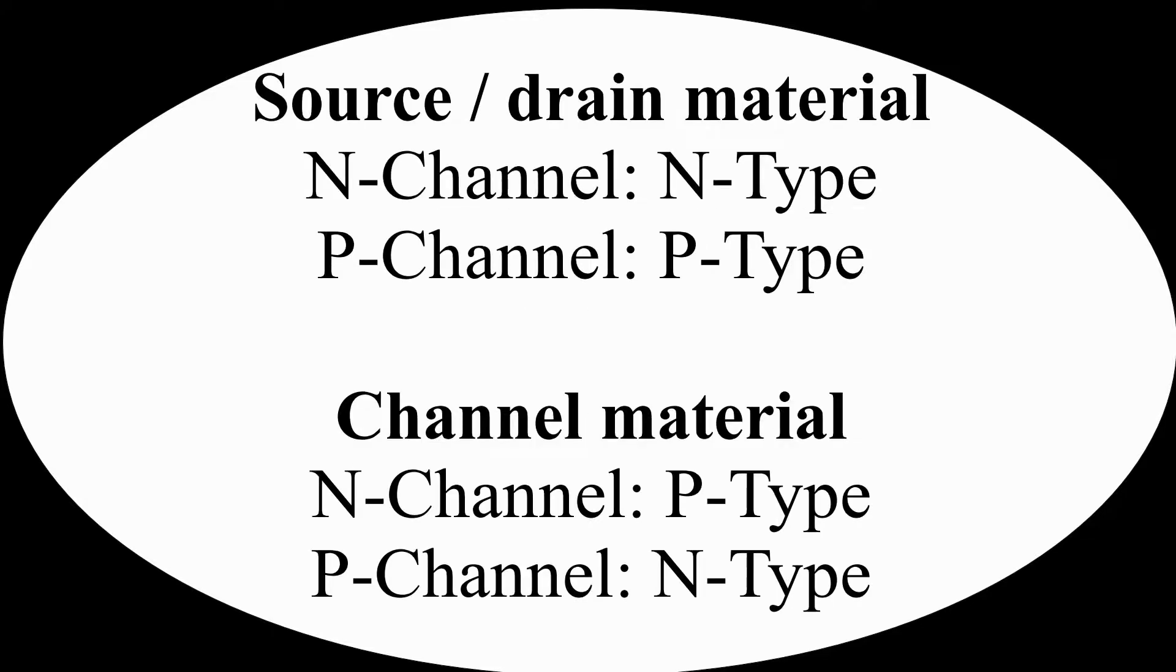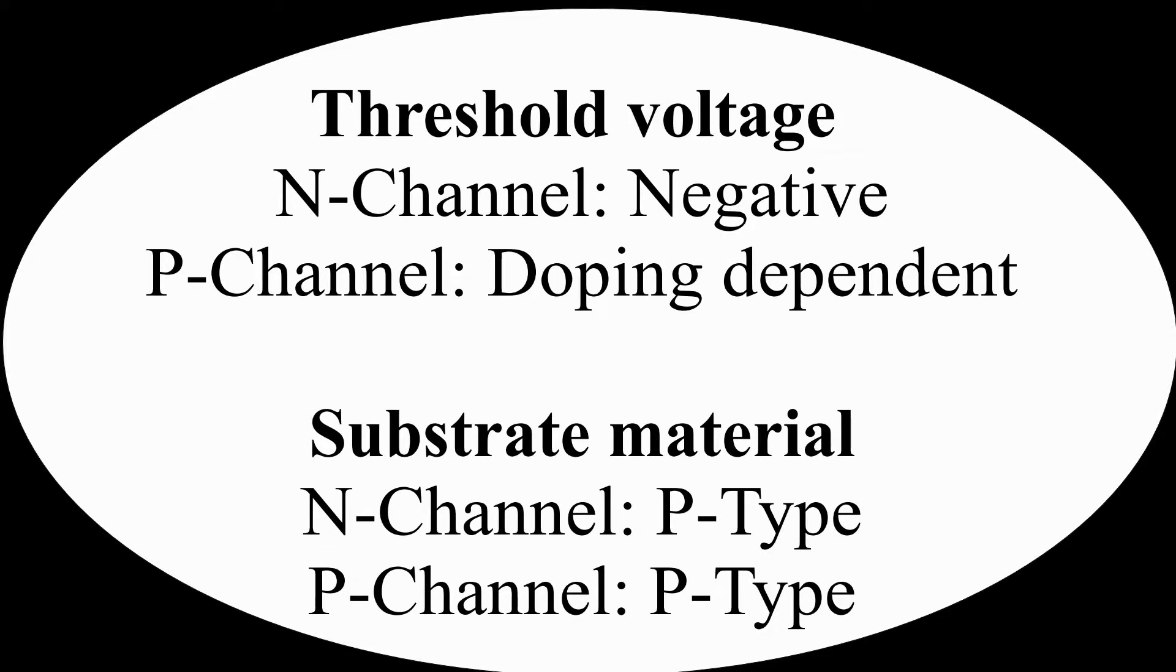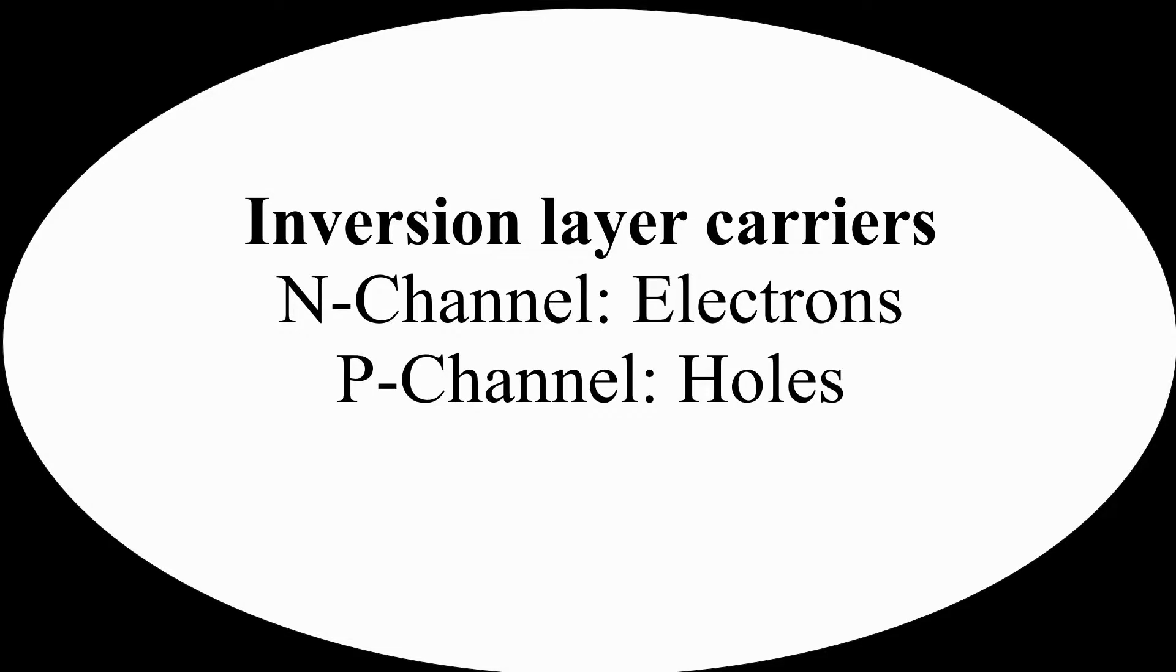In N-channel, the source-drain material is of N-type, while in P-channel it is of P-type. The material used for the channel in N-channel is of P-type, while in P-channel the material used for the channel is of N-type. The inversion layer or carriers: electrons are used for N-channel, while in P-channel, holes are used.